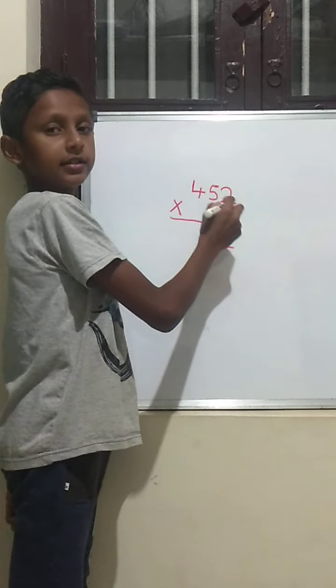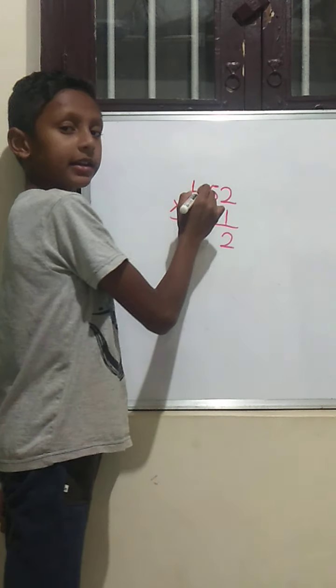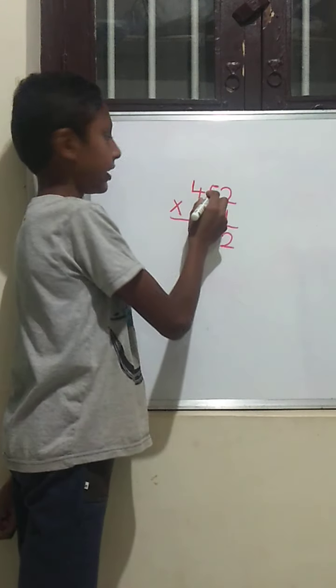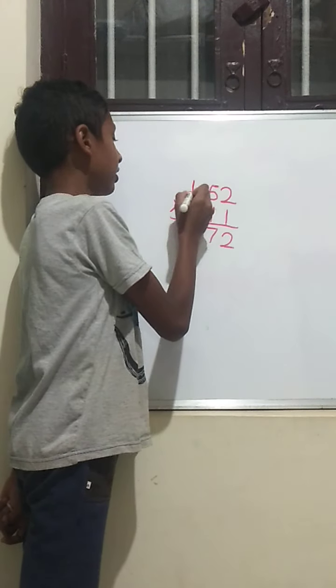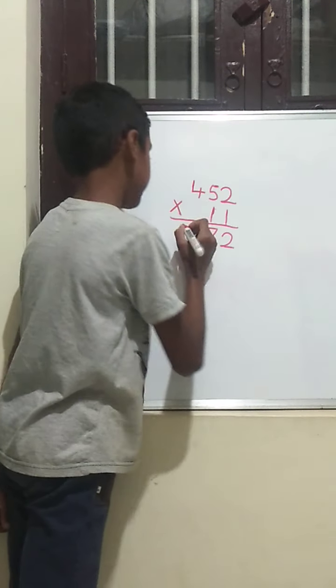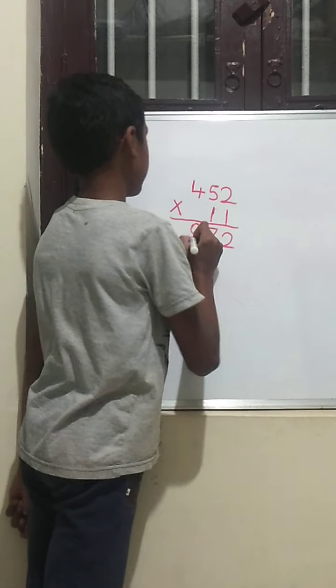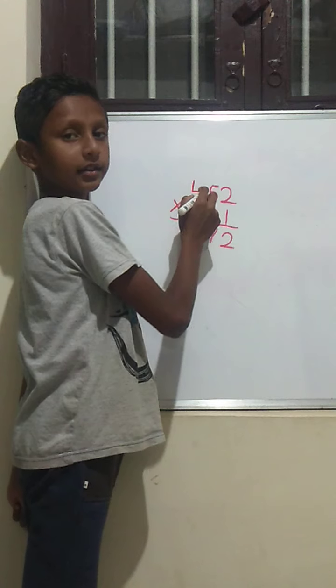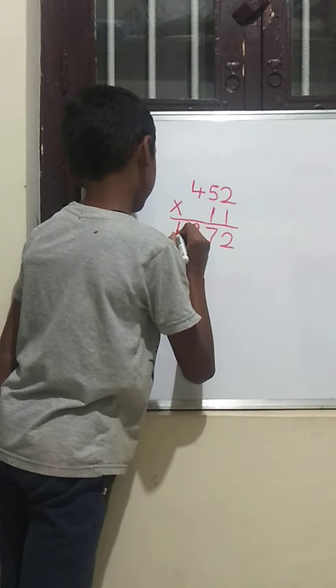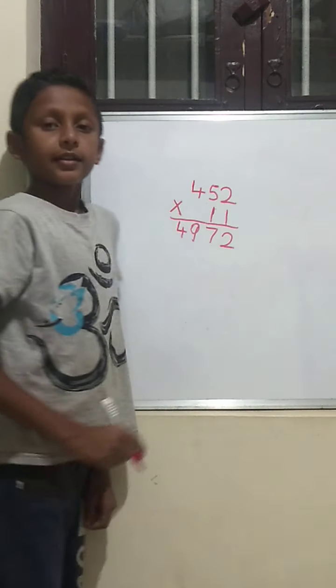Next, we should add right side digit to left side digit. 2 plus 5 is 7. And again, we should add right side digit to left side digit. 5 plus 4 is 9. And we should write the last number as it is. Isn't it easy? Let's go to 4 digit numbers.